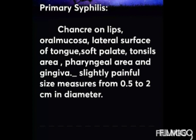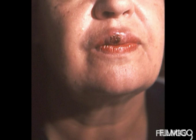Oral manifestations of primary syphilis include chancre on the lips, oral mucosa, lateral surface of the tongue, soft palate, tonsils, pharyngeal area, and gingiva. It is slightly painful and measures from 0.5 to 2 centimeters in diameter. This is an example of a chancre on the lips.